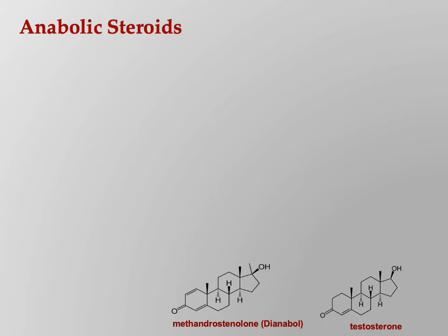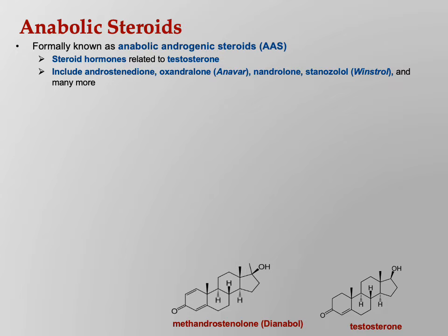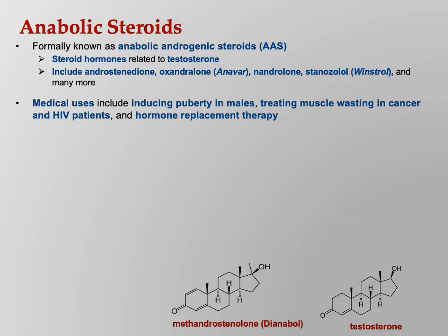Anabolic steroids — you've heard about these. Anabolism is to build up; catabolism is to break down. Anabolic steroids, formerly known as anabolic androgenic steroids (AAS), are all steroid hormones or close relatives of testosterone. They include androstenedione, oxandrolone, nandrolone, stanozolol, and many more — things you can buy at the gym if you know the right people. Medical uses include inducing puberty in males, treating cancer patients with muscle wasting, HIV patients, and hormone replacement therapy.